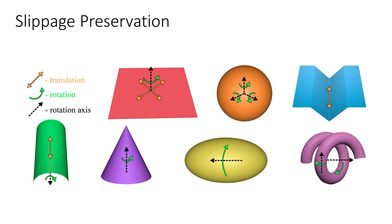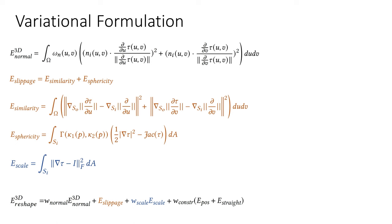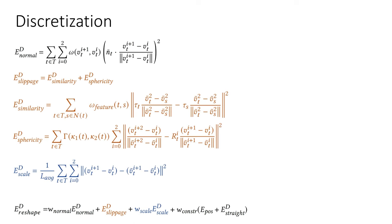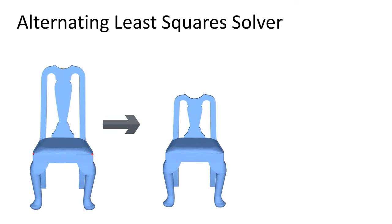We note that rotational and translational slippable motion is preserved when surfaces are scaled by constant factors along the principal curvature directions, and that spherical regions remain slippable only under uniform scaling. We formulate these requirements as a variational optimization problem and integrate them into our solver.